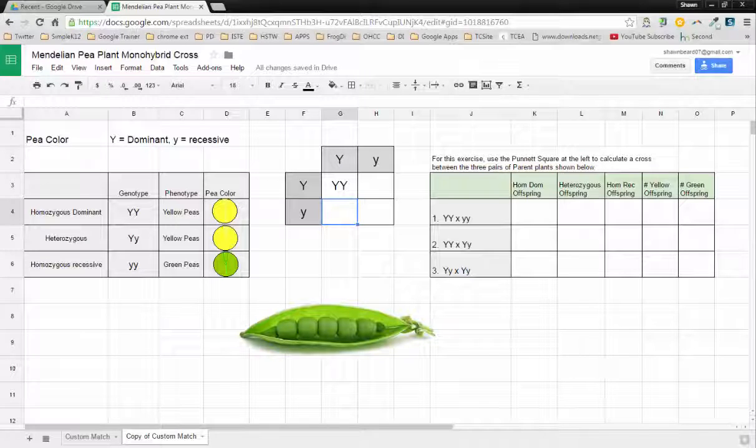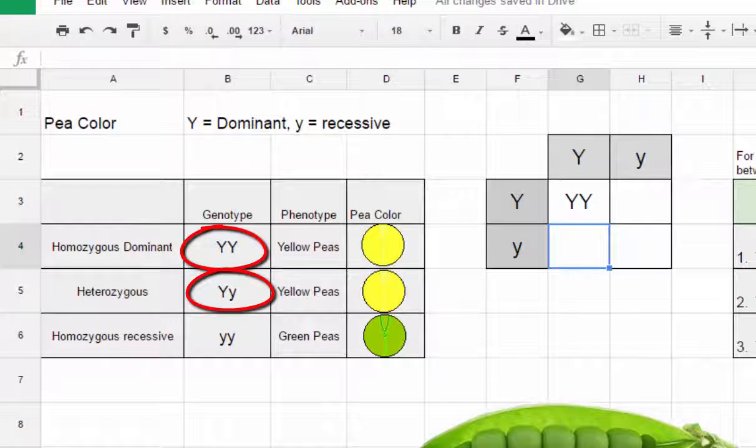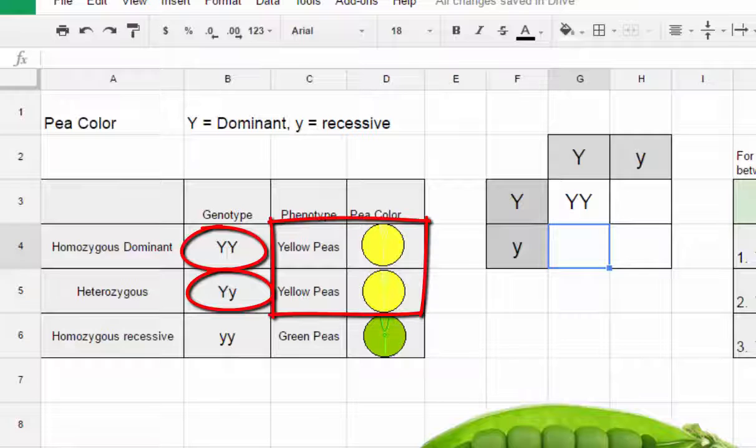Punnett squares is one of those things that's always been at the front of my mind when it comes to using Google Sheets. One of the disconnects that occurs with students is it's often hard for them to associate a homozygous dominant genotype or heterozygous genotype and the phenotype or the outcome that comes from that. Even though a heterozygous might be capital Y lowercase y and a homozygous dominant has two capital Ys, just the presence of that one dominant allele means that it's the same color as the homozygous dominant, but kids don't often come to that realization just on paper.